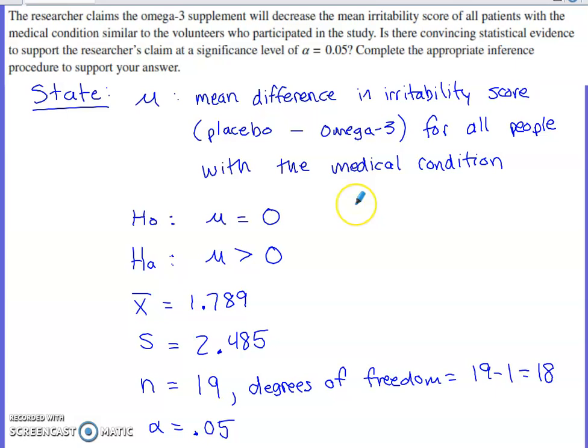I've labeled my stating portion of the problem. What I'm trying to do is I'm trying to make a judgment about a population mean, and that population mean would be the mean difference in the irritability score for all people with the medical condition. The null hypothesis would be that there is no difference in irritability from placebo to the omega-3 supplement. The alternative, now here's where noticing the direction of the subtraction is important.